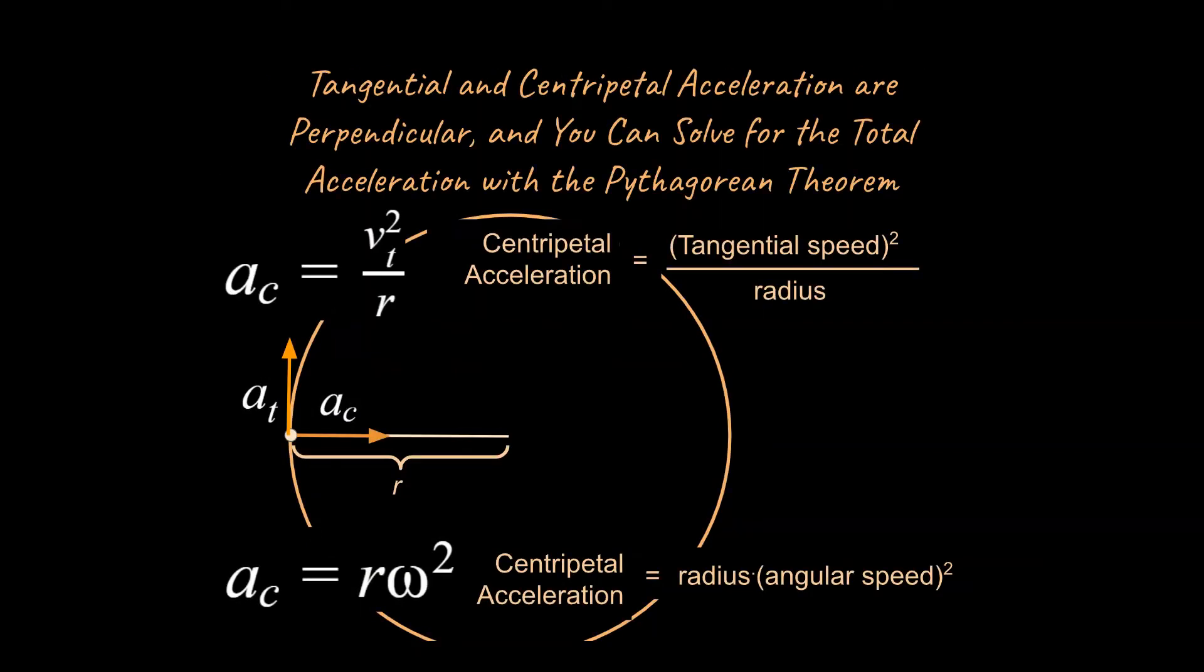All right, well you may not know how this works, but let me go ahead and show you. So we're going to use the head-to-tail method, and we're going to solve for the overall total acceleration using the Pythagorean theorem after using the head-to-tail method of vector addition.